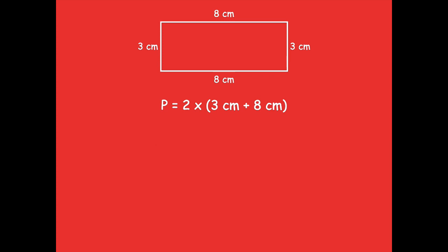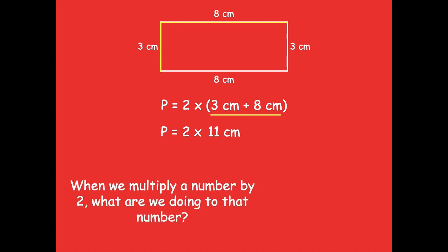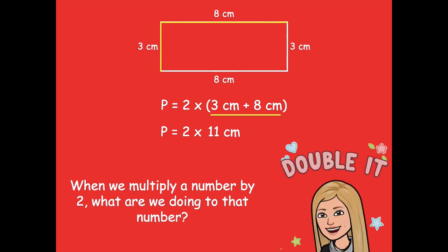Let's look at this by solving the part in parentheses. Perimeter equals 2 times — we want to solve this part, which represents the two side lengths of our rectangle. What's 3 centimeters plus 8 centimeters? It's 11 centimeters. When we multiply a number by 2, what are we really doing to that number? Yeah, we double it.